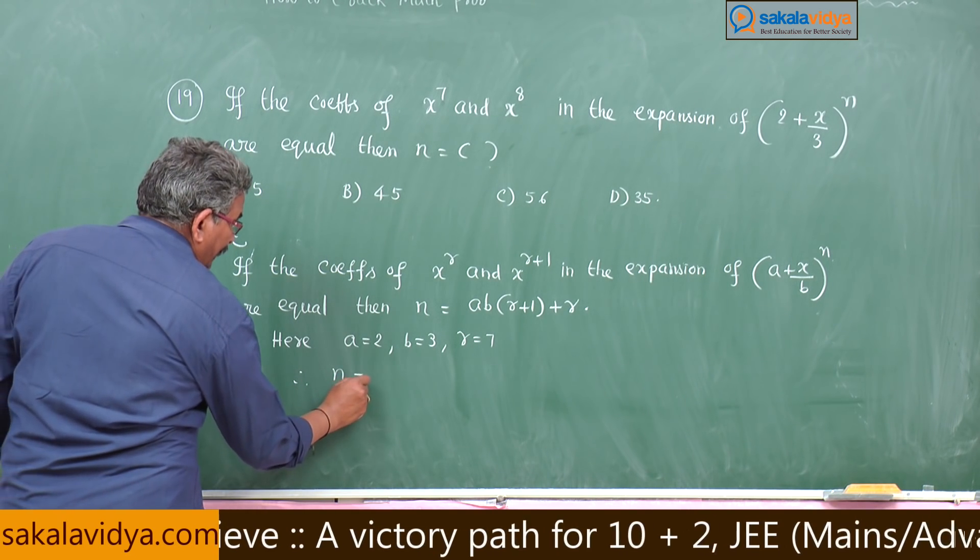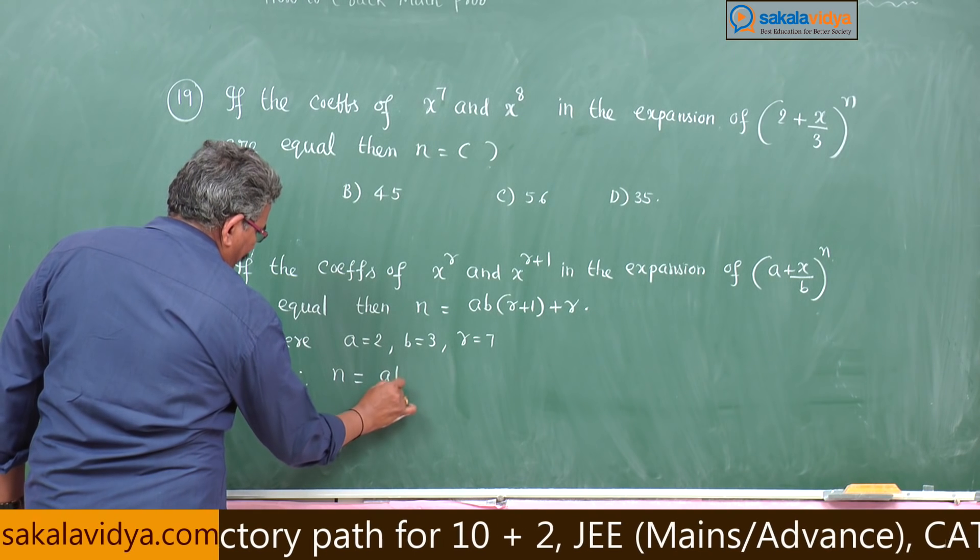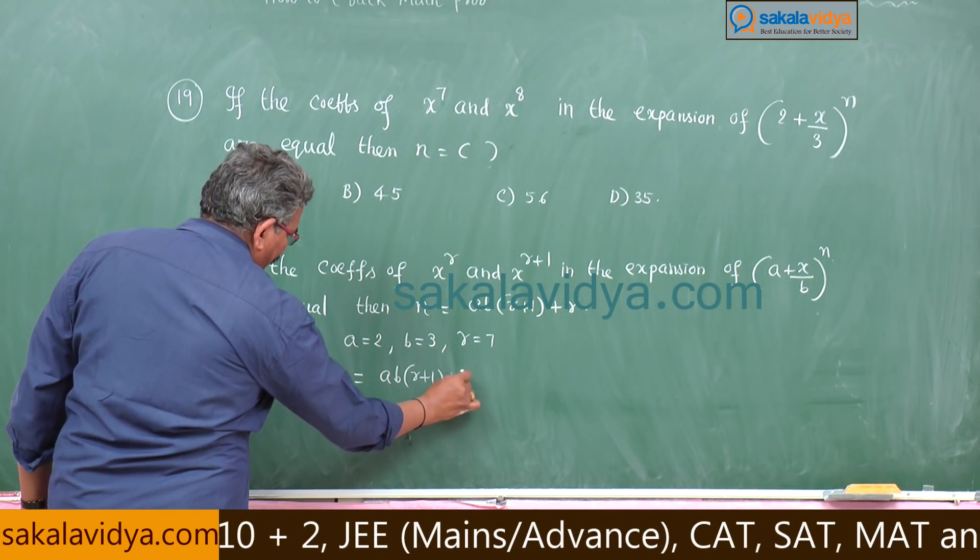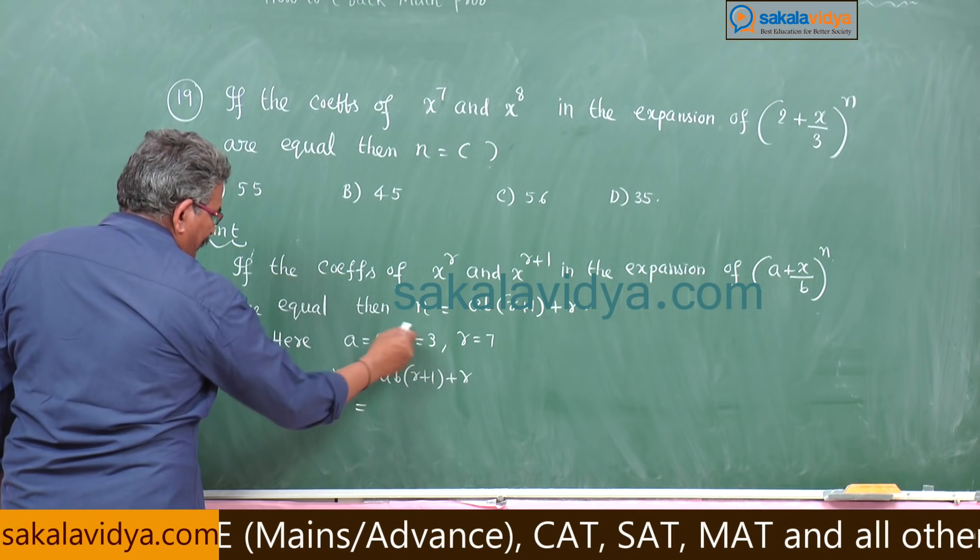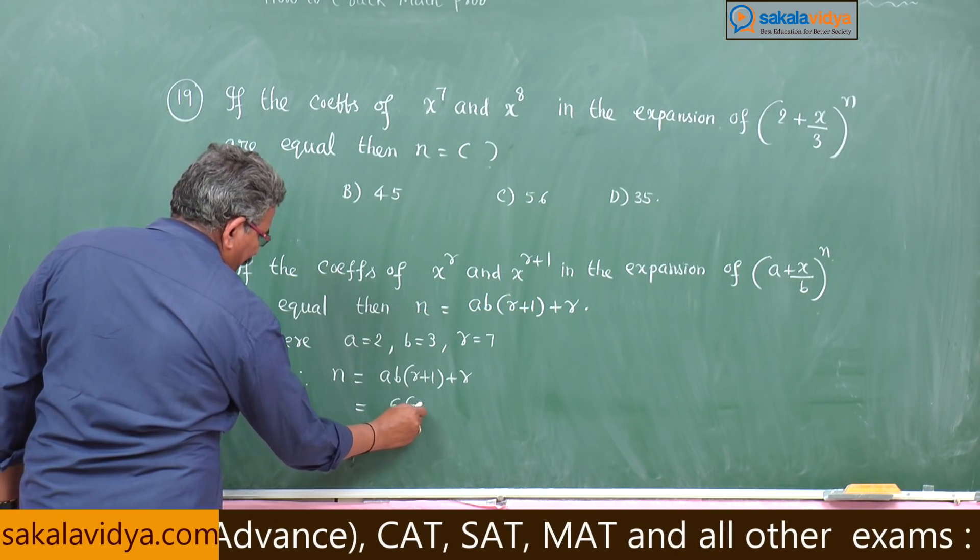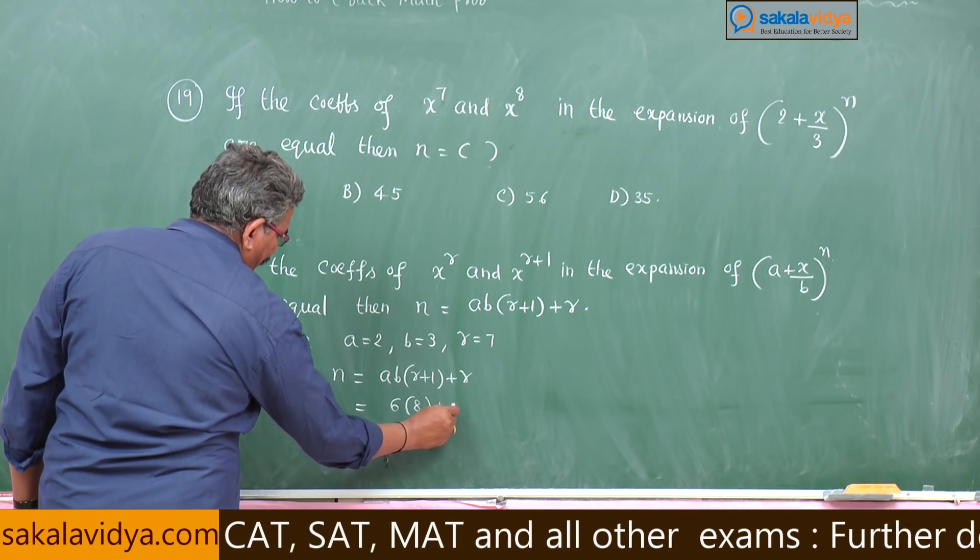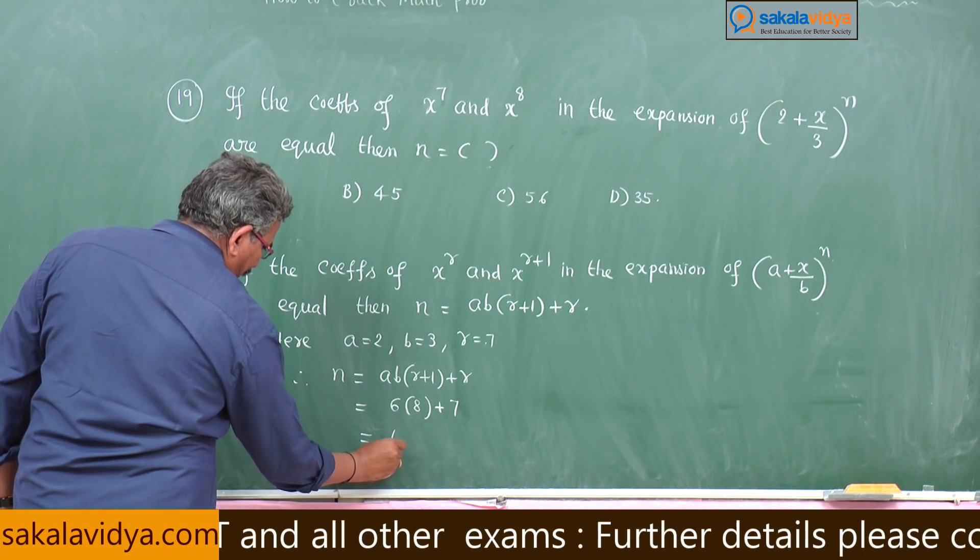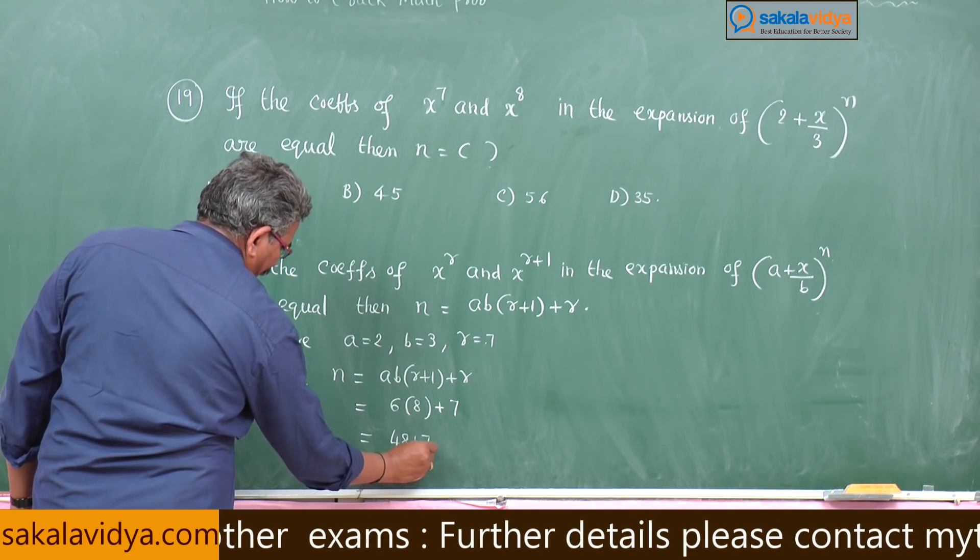Therefore, formula n is equal to a into b into r plus 1 plus r, r plus 1 is 8, r value is 7, 48 plus 7, 55.